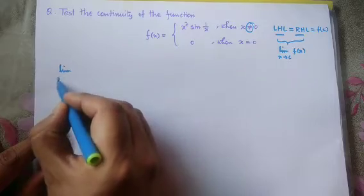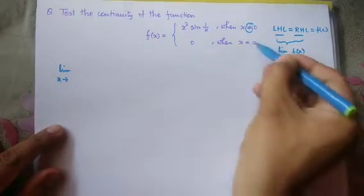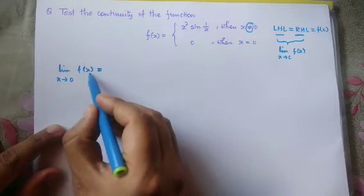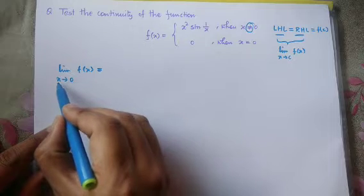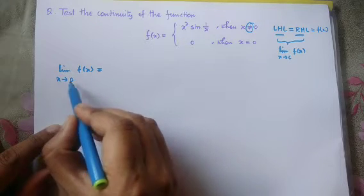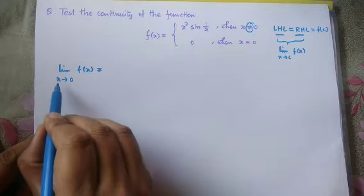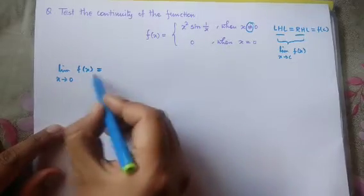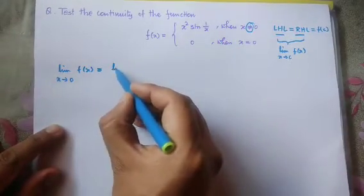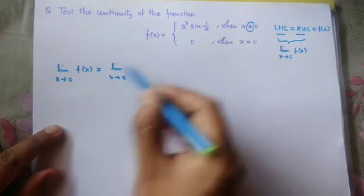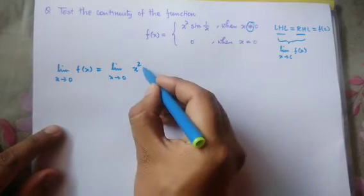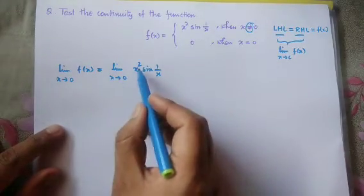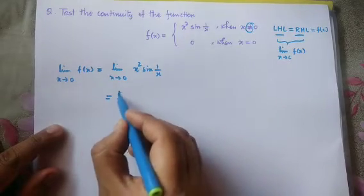So I have: limit x tends to 0 of f(x). Now let's see what is the value of the function. As x is going towards 0, the value of x is not exactly 0, almost equal to 0. So if x is not equals to 0, then the value of my function becomes x squared sin(1/x). That's why I can write: limit x tends to 0 of f(x) equals to x squared sin(1/x).